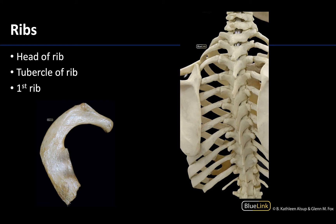There are two major structures that I want you to be able to identify on a rib: the head and the tubercle. I'm going to show you these on the first rib, which I have over here separately, because it is such a unique rib — it is relatively short and a bit more robust on its superior side, as you're going to have the anterior scalene as well as the middle scalene attaching here. The head is going to be the most posterior portion of the rib, with the tubercle just lateral to that structure.